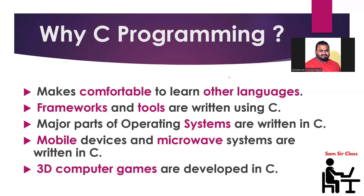Also, whenever you discuss other programming languages like Java or Python, they are object-oriented programming languages. But to understand what object-oriented means, you need to understand the basic concepts of C first. That is the first key point — learning C makes you comfortable. If you know C programming and its basic concepts, it will definitely help you learn other programming languages.